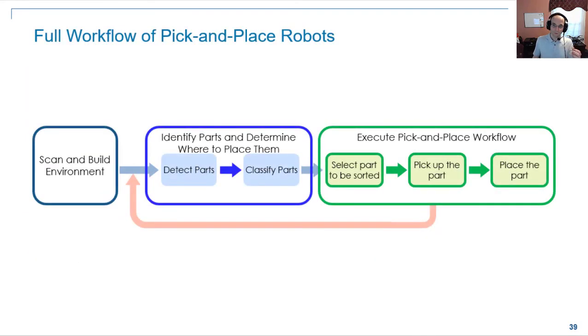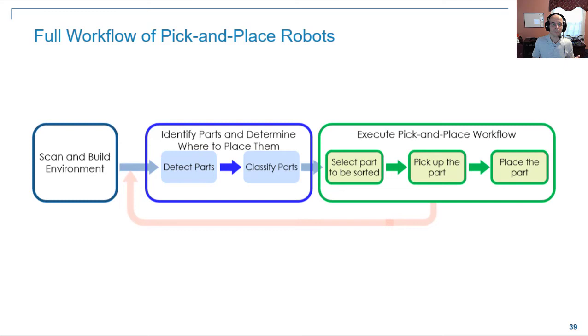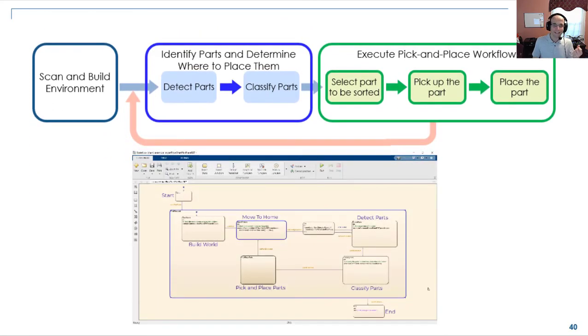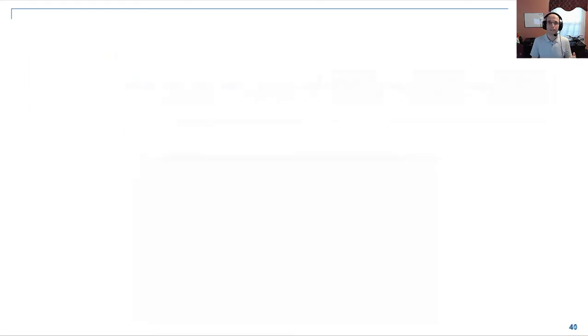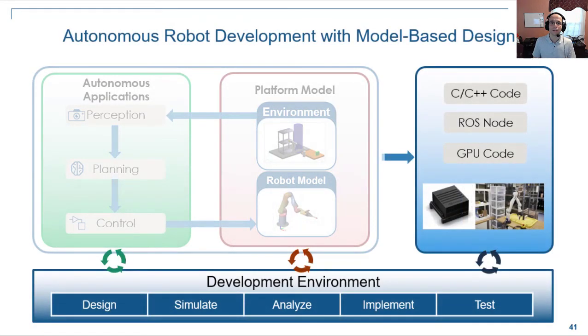So once you're sure that we can execute this pick and place, we can step back and integrate this workflow. Again, in most applications, you don't just want to pick a single part. You want to do things repeatedly 24-7 and as fast as possible. So probably there's some kind of state machine that you also have to implement to run particular tasks repeatedly.